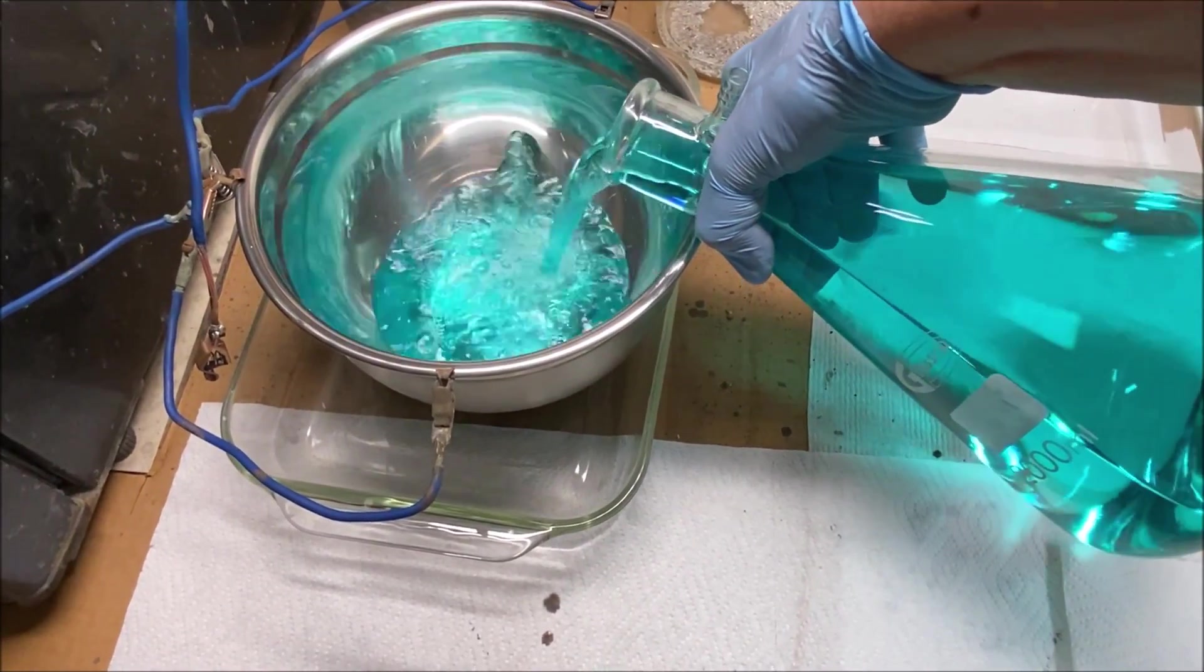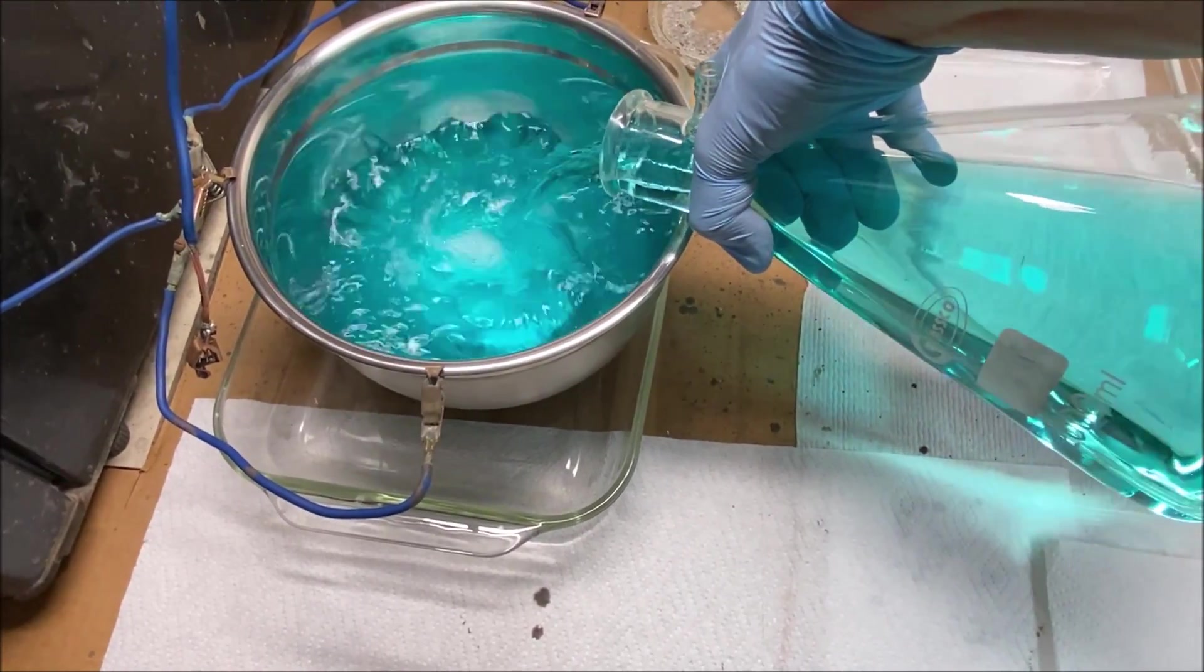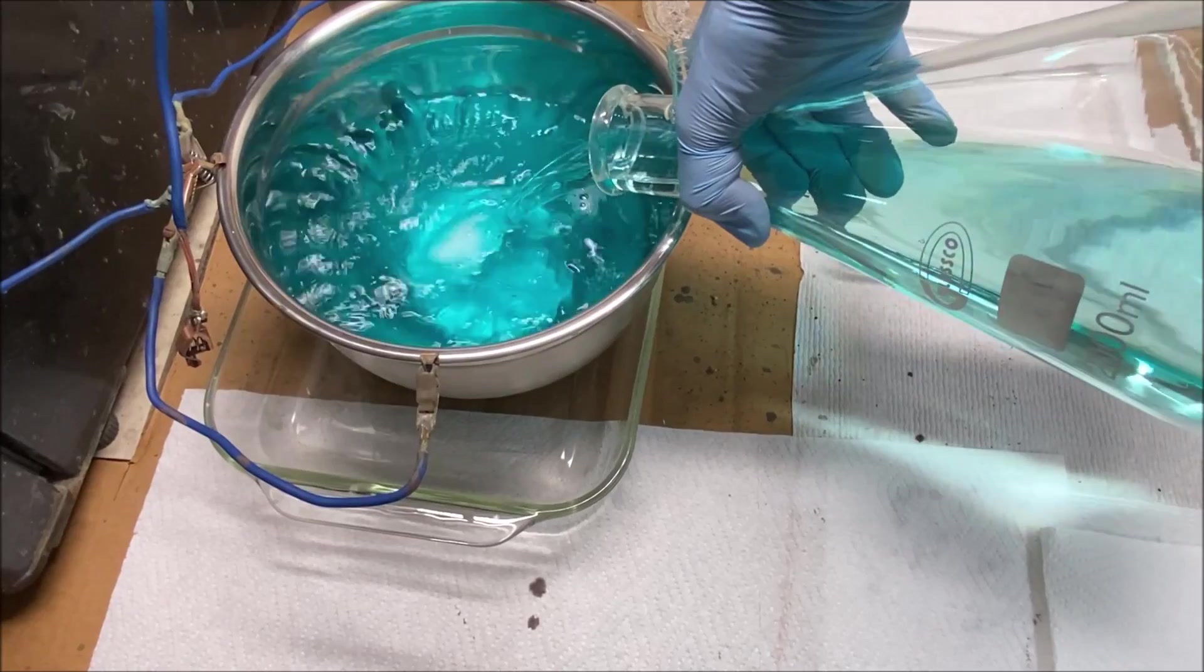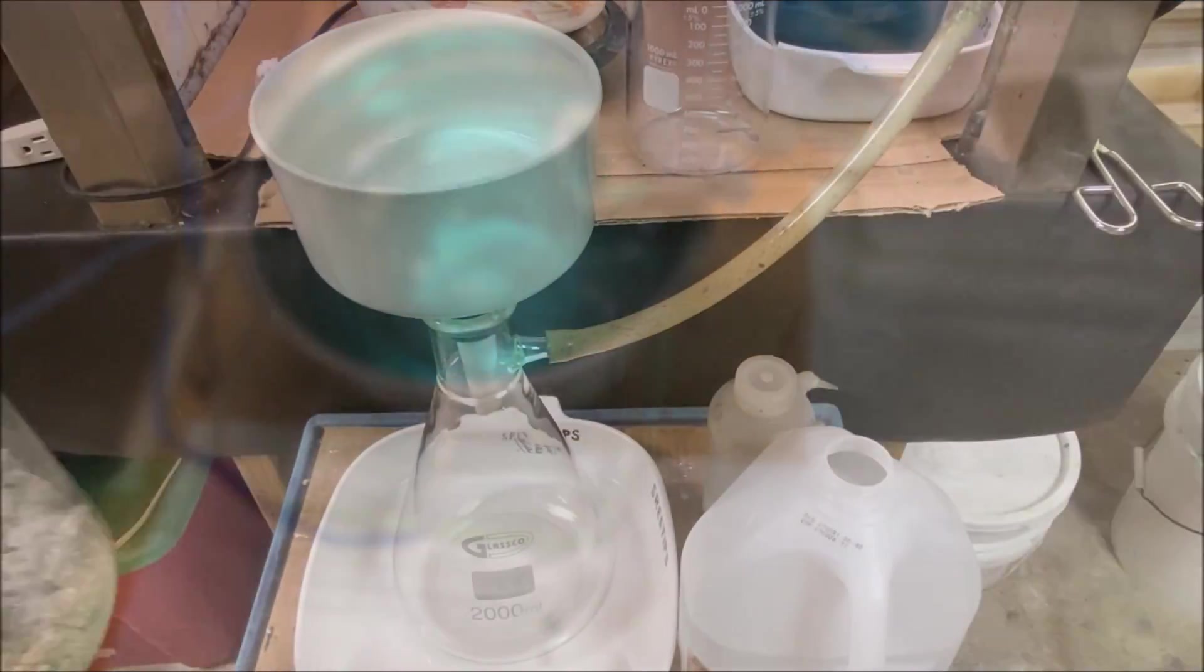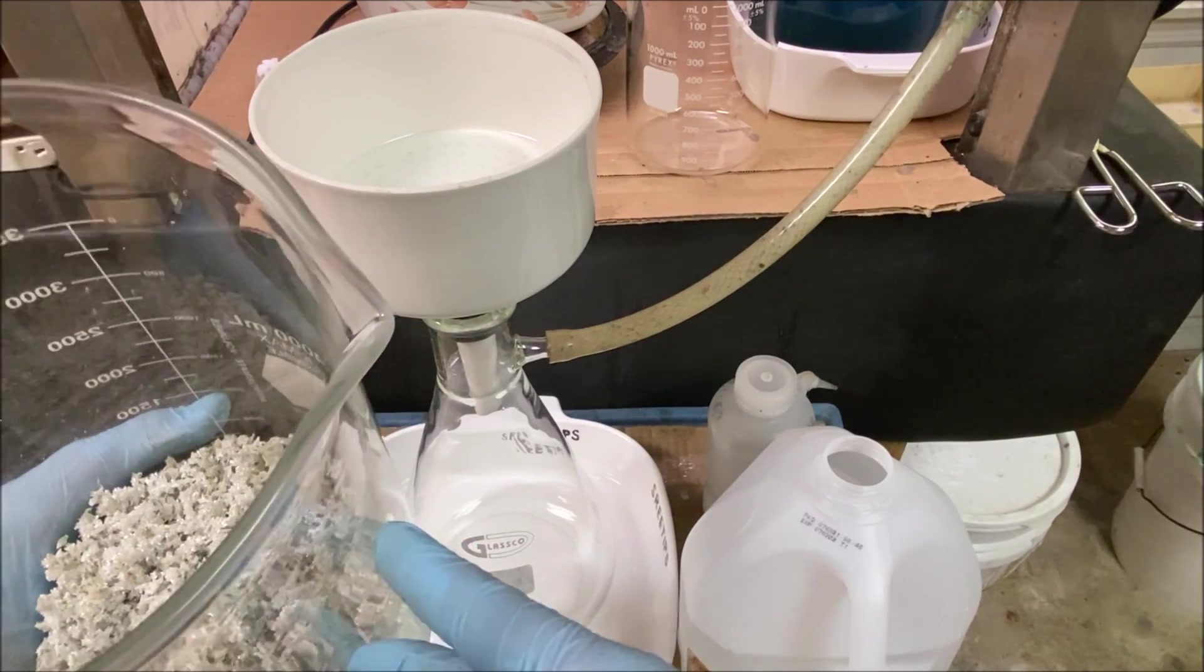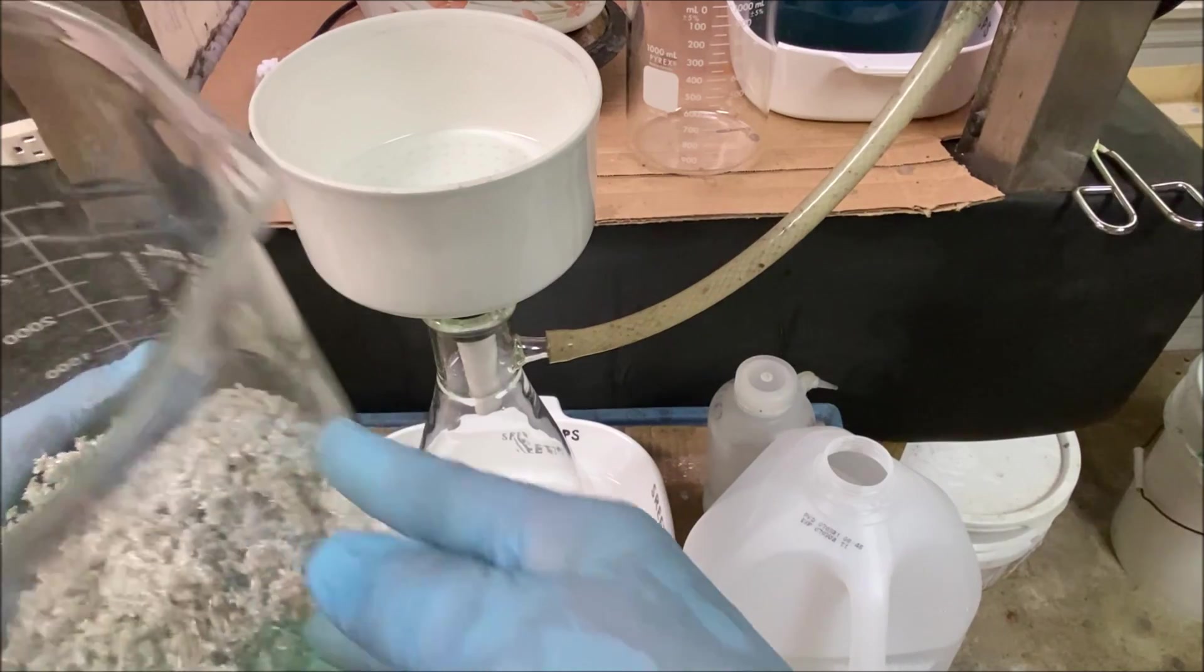This is a clean bowl. I've got the filter set back up here. Here's our silver crystal that was discolored that we're going to run back through the cell.